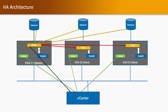Looking at the HA architecture in more detail: on each ESXi host we have vpxa and hostd agents. vpxa communicates with hostd, and hostd communicates with the FDM agent. Each ESXi host has a shared datastore. The FDM agent running on the master ESXi host communicates with the datastores on each ESXi host and with FDM agents running on the slave servers. vpxa provides ESXi host information to vCenter, and FDM provides heartbeat and high availability status of other ESXi hosts to the vCenter Server.